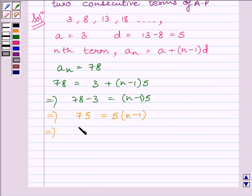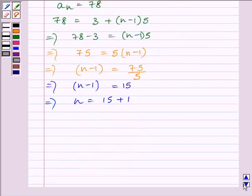This implies n minus 1 is equal to 75 divided by 5. This implies n minus 1 is equal to 15. We get n is equal to 15 plus 1. This implies n is equal to 16.